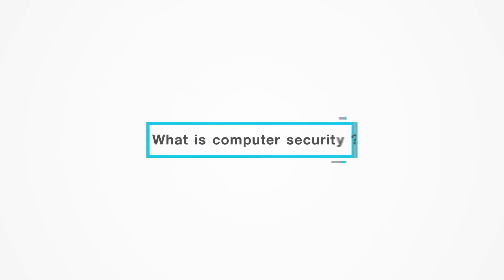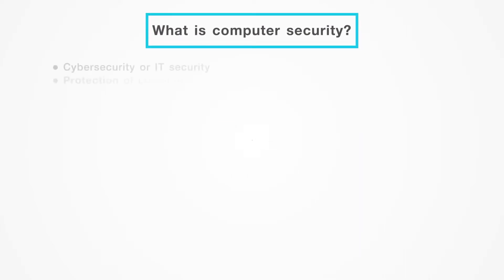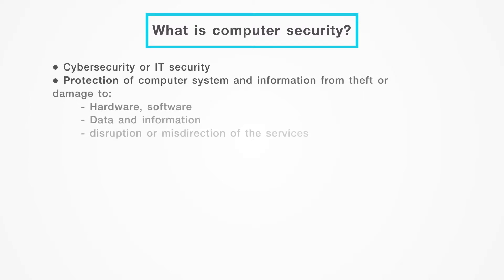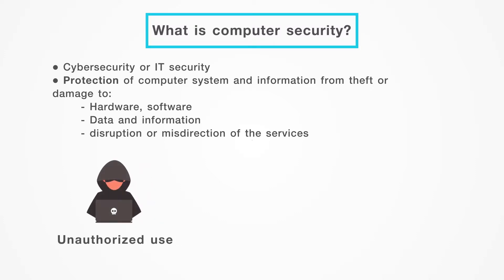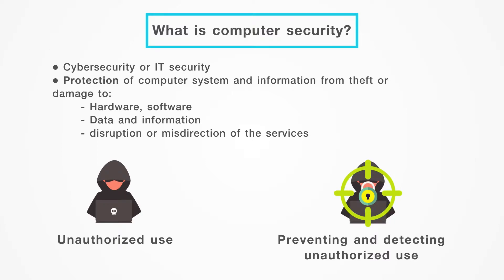What is computer security? Computer security, also known as cyber security or IT security, is the protection of computer systems and information from theft or damage to the hardware, the software, and to the information on them, as well as from disruption or misdirection of the services provided. Computer security basically focuses on the protection against unauthorized use, which is the process of preventing and detecting unauthorized use of your computer system.